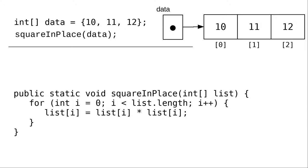Here's what happens when the call is made. Remember that arrays are references and all arguments are passed by value. That means that the reference to data is copied into the parameter list.